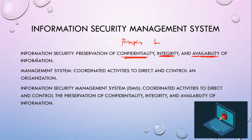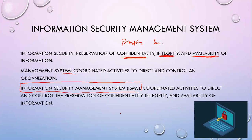Now you also have the management system. The management system of your information security is a coordinated set of activities to direct and control an organization. When you combine the two, you get Information Security Management System or ISMS — this is the framework of policies and controls that will manage security and risk systematically across the entire enterprise, coordinating activities to maintain confidentiality, integrity, and availability inside and outside the organization.